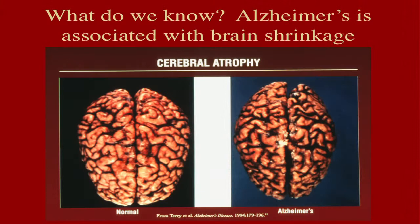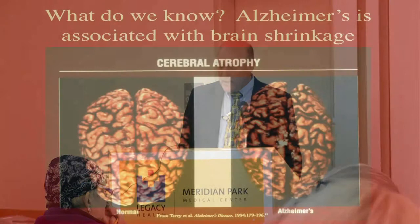On the left is a plump, full brain of a patient who died of some other disease, and on the right is a shrunken brain. You can see the spaces at the surface are larger, and the overall brain is smaller because there's actual loss of brain tissue — ultimately, death of nerve cells in the brain. The death of nerve cells is not entirely indiscriminate. Some of the brain cells are more sensitive to the degenerative process than others.